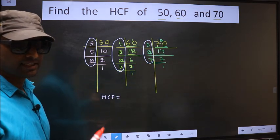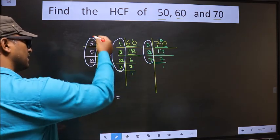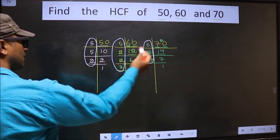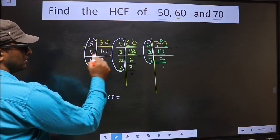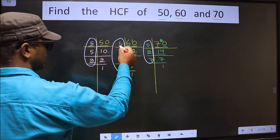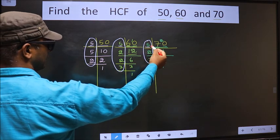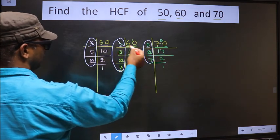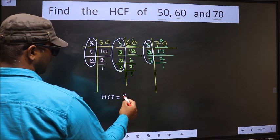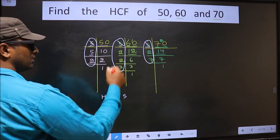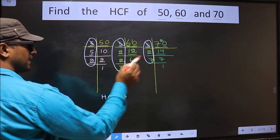So now let us find the numbers which are present here, here and also here. Starting with the number 5. Do we have 5 here? Yes. So next place, do we have 5 here? Yes. So you cut 5 right here. Next number 5. Do we have 5 here? No. So no need to check in the other place.